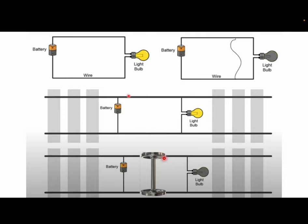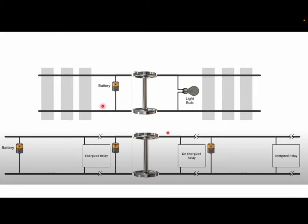To put that into perspective, imagine that the train tracks are completing the circuit. When a train moves on top of the circuit, that will turn off the light bulb, thereby indicating that this section of the track is occupied. In reality it's not light bulbs but relays. This relay is energized because a battery is connected to it. This relay is de-energized because a train is shorting the circuit, and this relay is energized. That's how the central computer knows which section is occupied and which sections are free.